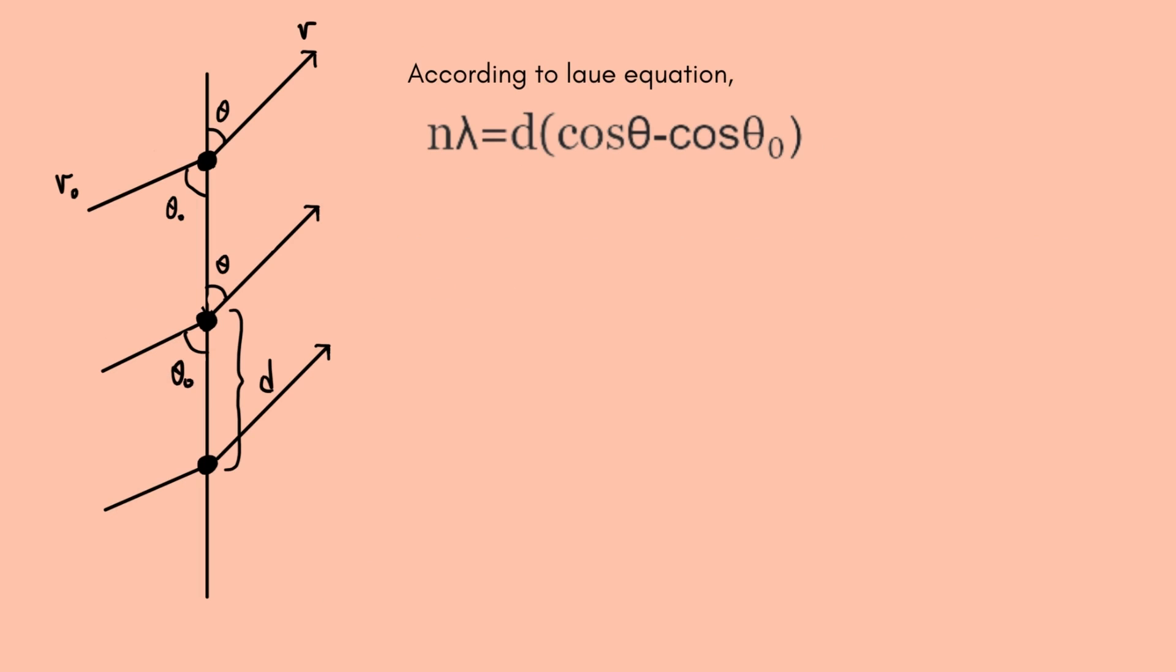According to the Laue equation, n lambda equals d cos theta minus d cos theta naught. Why is that so?